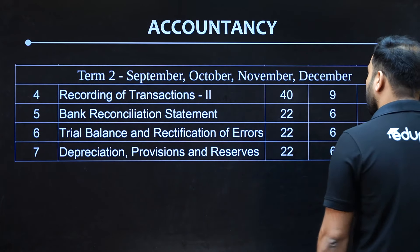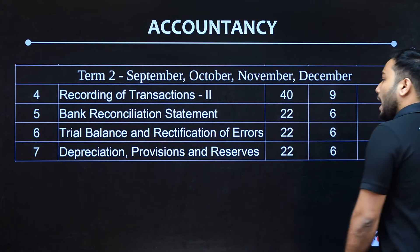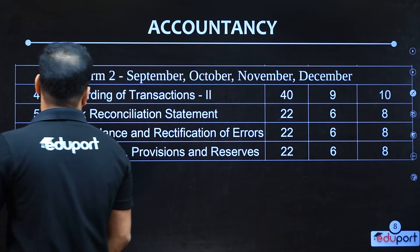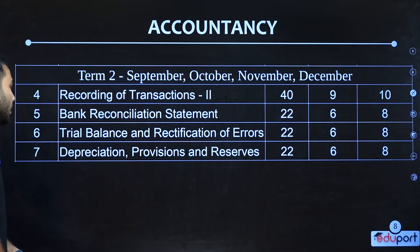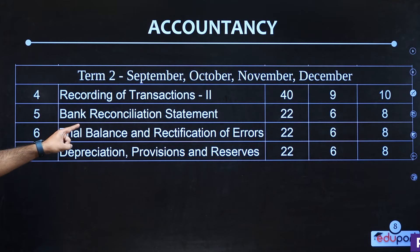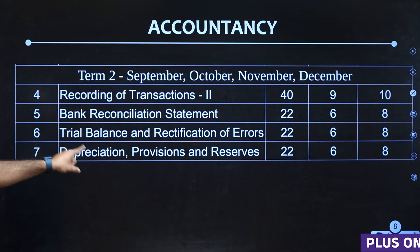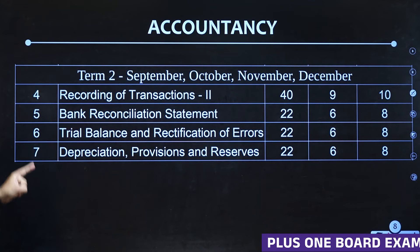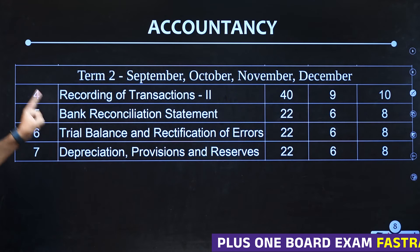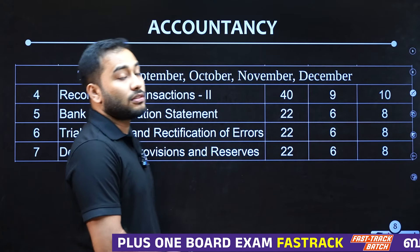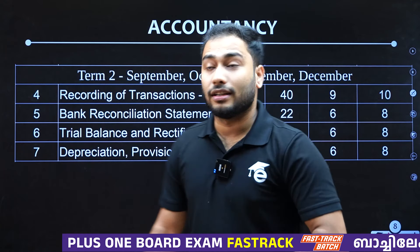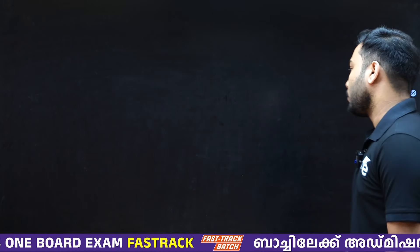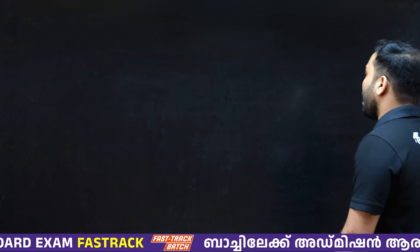In the 4th chapter, there are 4 chapters: Recording of Transactions Second, Bank Reconciliation Statement, Trial Balance and Rectification of Errors, Depreciation, and Provision and Reserves — this covers 3 chapters. You can learn these chapters in your accounts.